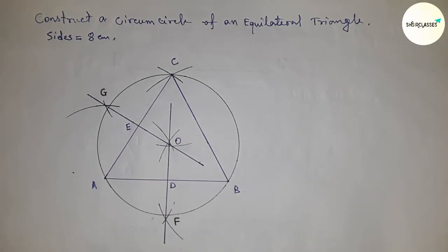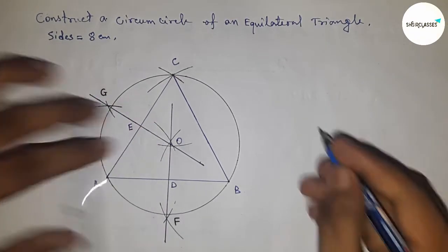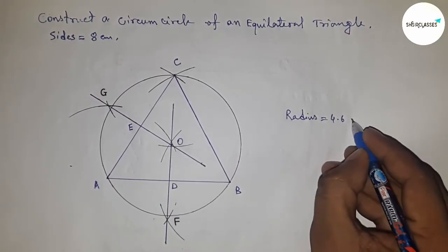Next, I'm going to measure the radius of the circle. The radius of the circle is 4.6 centimeters, so radius equals 4.6 centimeters.